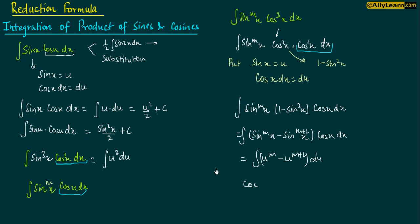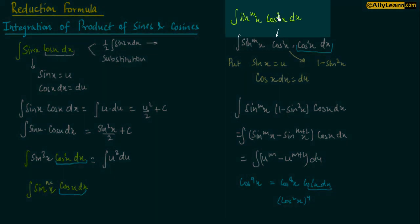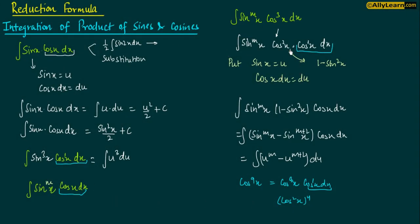तो friends देखिए, जब जब मेरे पास odd power होगी, तब तब मैं इसे एक even power और एक single power में लिख सकता हूं. जैसे cos⁹x को cos⁸x · cos x लिख सकते हैं - एक even power और एक single power. यह even power cos⁸x को cos²x की power 4 लिख सकते हैं. फिर cos²x की जगह 1 - sin²x replace कर दूंगा. So this procedure applies whenever the power of cos is odd. अगर cos की power even है तो यह method apply नहीं होगा.